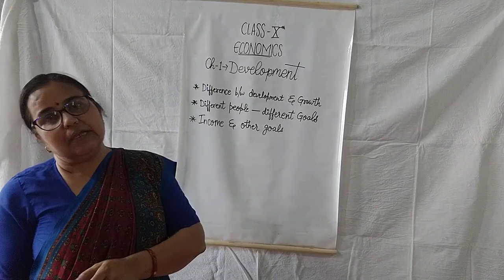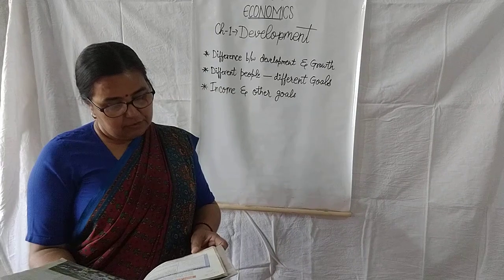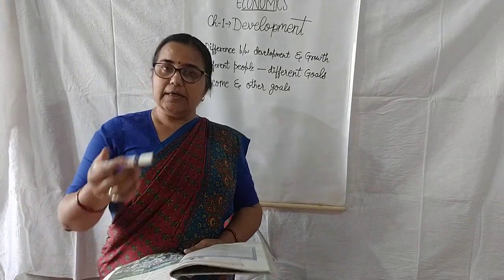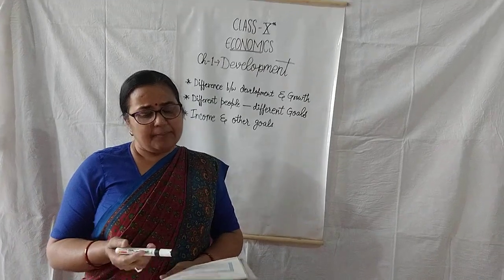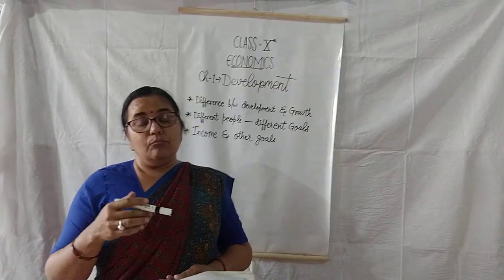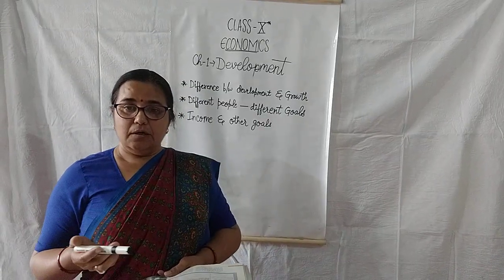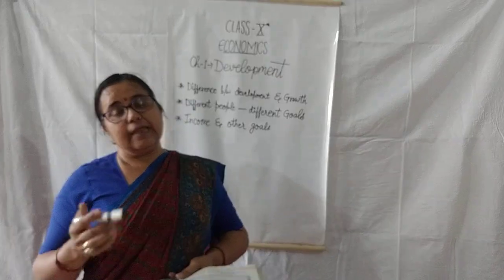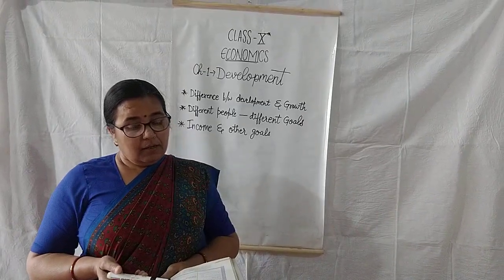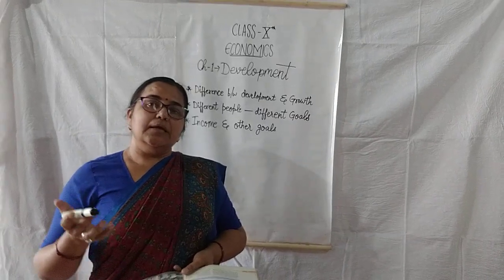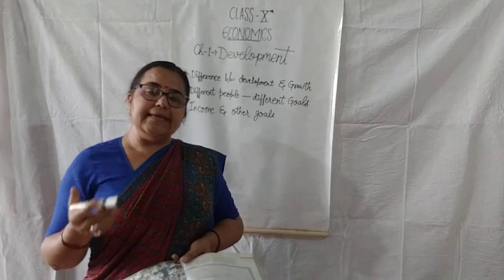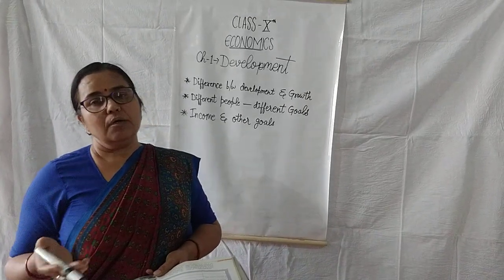Hamare alag alag development ke goals alag alag ho sakte hain. You can see in your chapter that on page number four, there are lots of tables. And in that table, you can see ki yahaan par aapko examples diye hain ki har kisi ke liye development ka matlab ek nahi hai. For example, ek prosperous farmer hai Punjab ka. For that particular farmer, development ka matlab kiya hai? That he can earn more and more money by the agriculture produce, and that he gets help to grow seeds easily so that he can earn more produce.